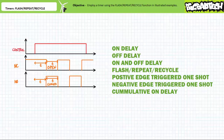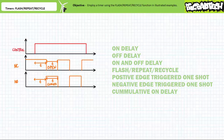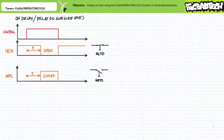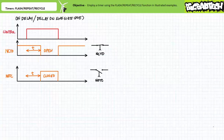Timers can perform numerous functions including but not limited to on-delay, off-delay, on-and-off-delay, flash, repeat or recycle, positive or negative edge triggered one-shots, cumulative on-delays, and more. Today's lecture deals exclusively with the flash, repeat, or recycle function. Before we dive into an in-depth discussion of the flash function, allow me to perform a brief walkthrough and review of common timer functions. My intention is not to confuse you, but to compare and contrast their behavior. Repeated exposure to this topic is the best tactic because similar terms are employed for different functions, and it would be a horrible mistake to confuse one function for another. Expect me to revisit this exact same walkthrough every time we discuss a new function in-depth.